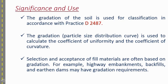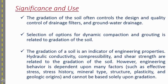Significance and use of ASTM D6913: this test method is used for soil classification purposes as per ASTM D2487. The particle size distribution curve is used to calculate the coefficient of uniformity (CU) and coefficient of curvature (CC). It is also used for selection and acceptance of fill material for purposes such as highway embankments, backfills, and earth dams, as well as for design and quality control of drainage filters.